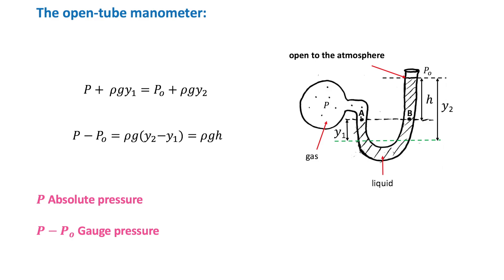The open-tube manometer is another device used to measure the pressure of a gas contained in a vessel. The pressure at all points on the reference level is equal. Using the hydrostatic equation, p₀ + ρgy₂ = p + ρgy₁, which rearranges to p − p₀ = ρgh. Here p is known as the absolute pressure, and p − p₀ is known as the gauge pressure.